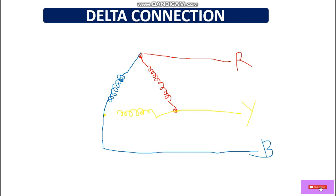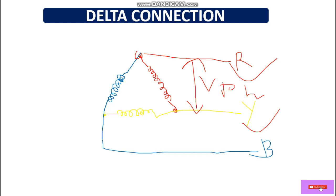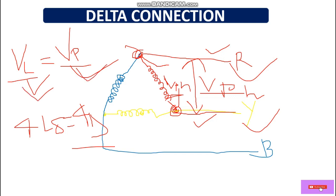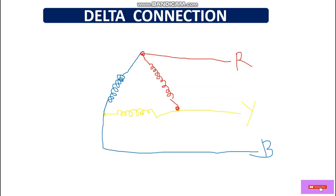In a delta connection, the voltage relationship is: line voltage equals phase voltage. Both ends of each coil are directly connected to the supply lines, so if our line voltage is 415 V, then the phase voltage is also 415 V. There is no separate neutral point in delta connection.